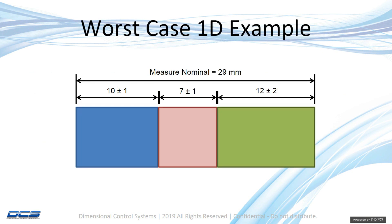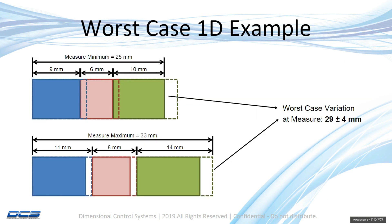So we're going to focus on a simple three block assembly. You can see here, if I have three blocks — 10 plus or minus 1, 7 plus or minus 1, 12 plus or minus 2 — this is a simple stack. We can look at it and see that the minimum dimension, if we are only looking at it in one dimension, left and right.